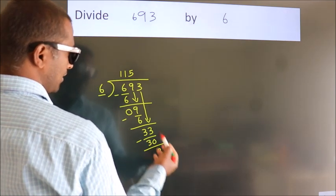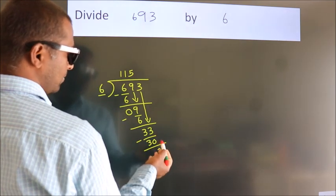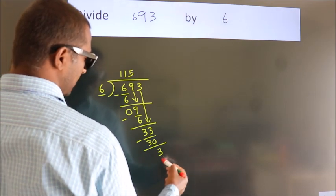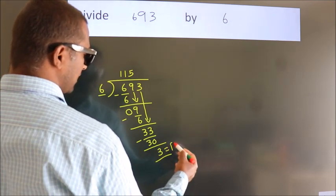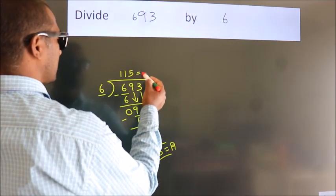After this, no more numbers to bring down. So we stop here. This is our remainder. This is our quotient.